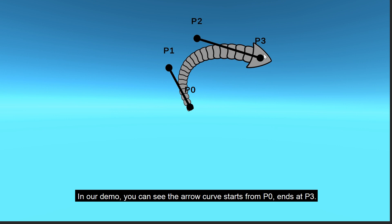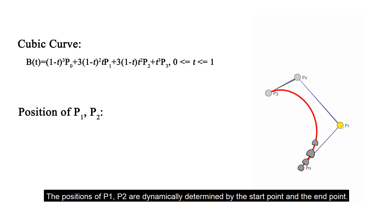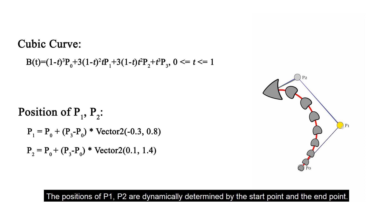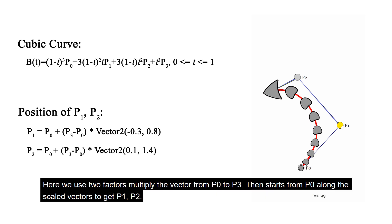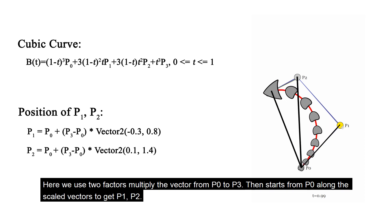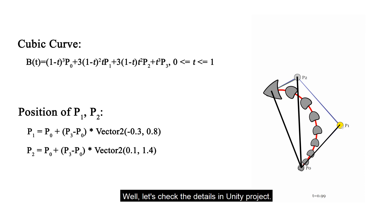In our demo, you can see the arrow curve starts from P0 and ends at P3. P0 is a fixed point at the arrow emitter point, and P3 will follow the mouse position. The position of P1 and P2 is dynamically determined by the start point and the end point. Here we use two factors to multiply the vector from P0 to P3, starting from P0 along the scaled vectors to get P1 and P2.